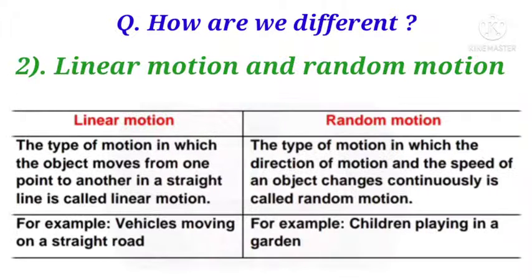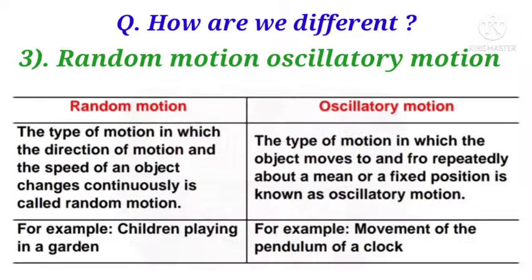Question number two is linear motion and random motion. Here is the definition, distinguished points, and the example. Next, question number three is random motion and oscillatory motion. Here is the definition, one distinguish of random and oscillatory motion with an example.